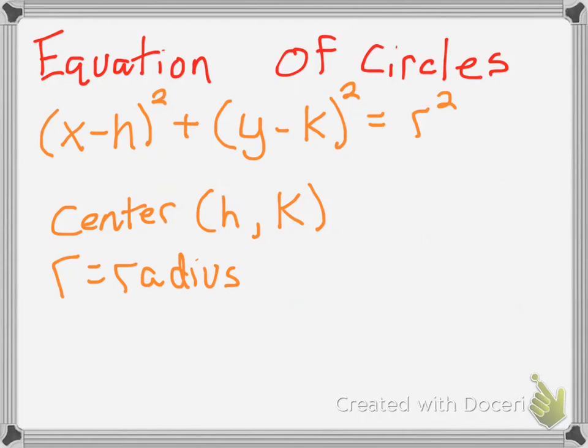Well, you might want to pause the video and write this down. We got (x - h)² + (y - k)² = r² where the center of the circle is represented by h and k, and r represents the radius, which we already know.